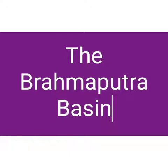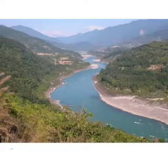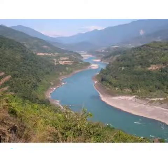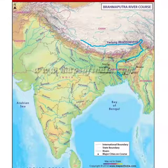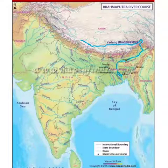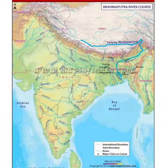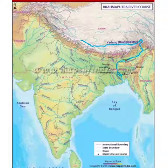Today we are going to discuss about the Brahmaputra Basin. River Brahmaputra and its tributaries form the Brahmaputra Basin. It lies in the easternmost part of the northern plains. The Brahmaputra does not have any major tributaries in India. It starts in China, Tibet, and enters India through Arunachal Pradesh. After that it enters Assam and forms the Brahmaputra Plain. The plain areas of the state of Tripura are also included in this region.